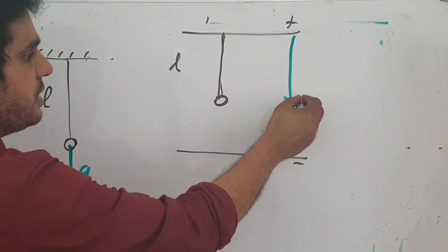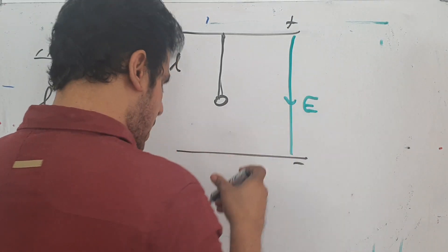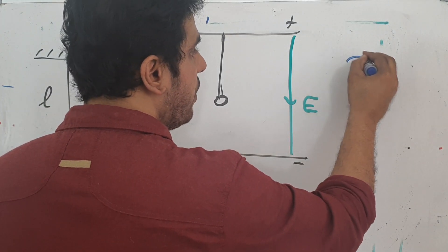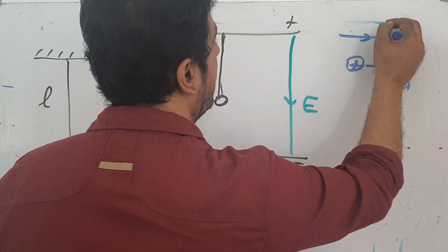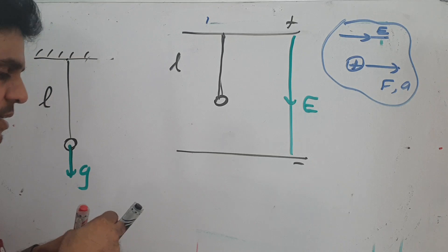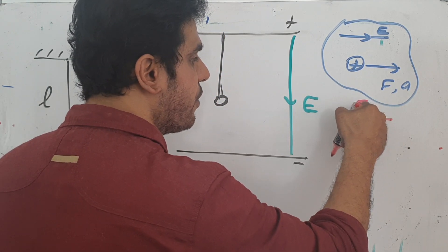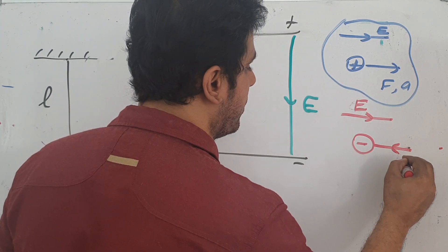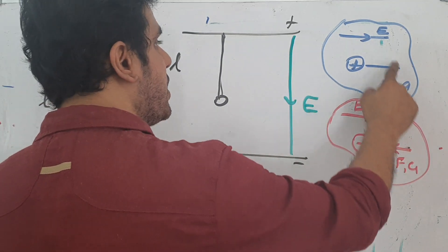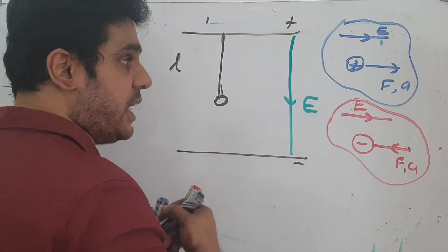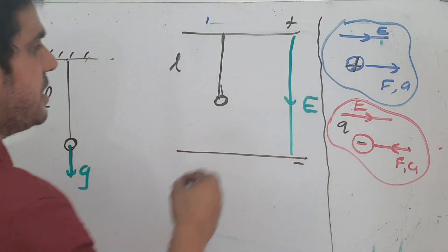The electric field always lies from plus to minus — in this case, vertically downward. For a positive charge, the force and acceleration are parallel to the electric field direction. For a negative charge, the force and acceleration are opposite to the electric field direction. So: positive charge → force parallel to field; negative charge → force opposite to field.